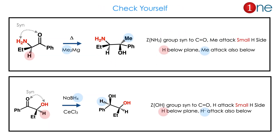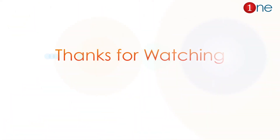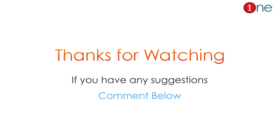Some examples are given to practice. In the first example, the chelating group is an amine which is syn, so the final product should be on the small side. Similarly, in the second example, the OMe and Felkin group are syn to each other, so the H-minus will attack on the small side. That's all from this episode — thanks for watching.